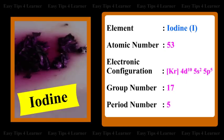For the element Iodine, the atomic number is 53. The electronic configuration is [Xe] 4F14, 5D10, 6S2, 5P5. The group number is 17 and the period number is 5.